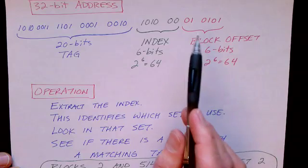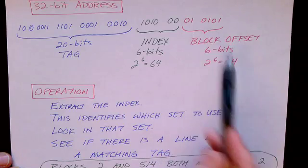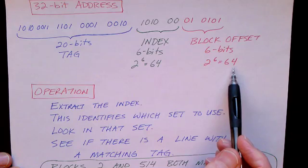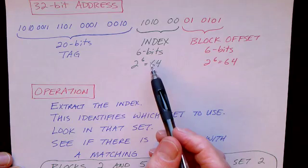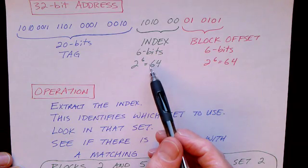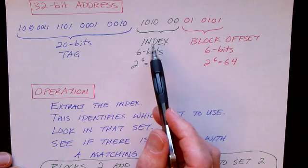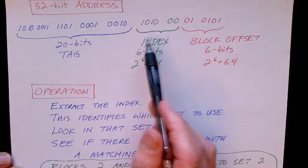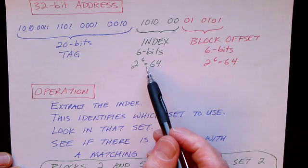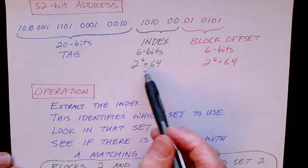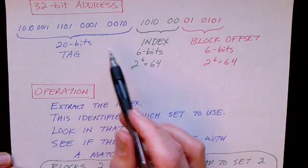With six bits we can address any byte within the block of 64 bytes, and as I said we have 64 sets in this particular example. So with six bits of an index we can choose which associative set we want, and then the remaining bits form the tag.